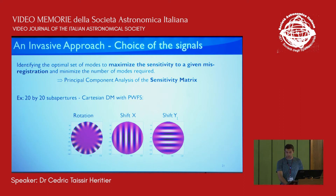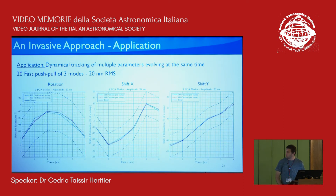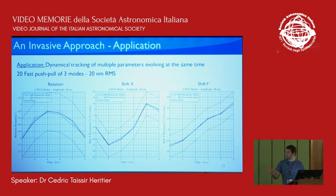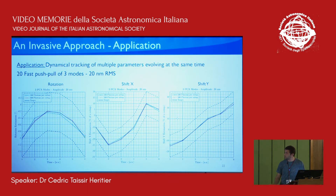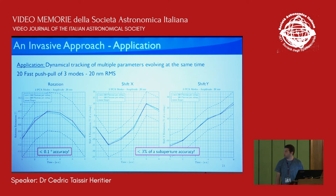Is this working well in simulation? Using the same type of system, we did some simulations. What you see is the estimation of different parameters — rotation, shift X, and shift Y. For different time samples, I change all three parameters so they evolve dynamically during observation. For each sample time, I measure 20 fast push-pull measurements of the three modes with an amplitude of 20 nanometers RMS. With this measurement, for different levels of noise, you can reach quite good accuracy that is extremely satisfactory for tracking the parameters of the model.